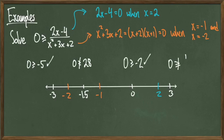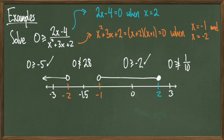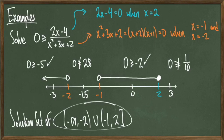After some calculations done off screen, plugging all this into the rational expression: negative 3 gives me negative 5, which is good. Negative 1.5 gives me positive 28, which I don't want. 0 gives me negative 2, which I want, but positive 3 gives me positive 1 tenth, which I don't want. The problem asks when the expression is negative, so test points negative 3 and 0 give me what I want. Since negative 2 and negative 1 are holes, I put open circles over them. Since positive 2 is a root and the inequality involves less than or equal to, I include it with a filled circle. The solution is negative infinity to negative 2, open, union with negative 1 to positive 2, open at negative 1 and closed at positive 2.